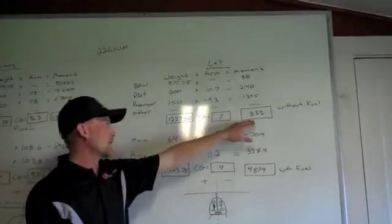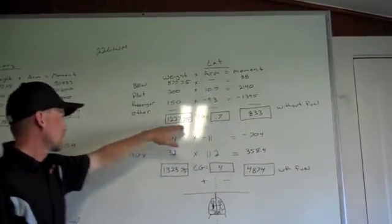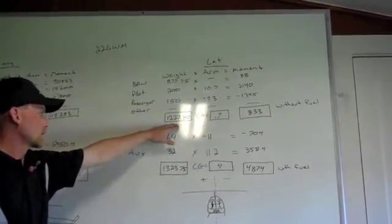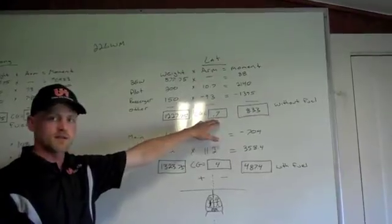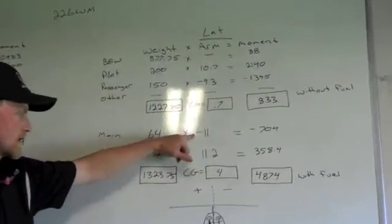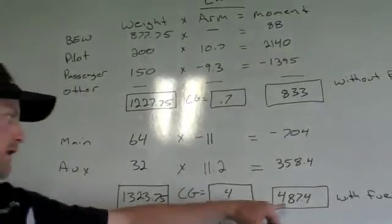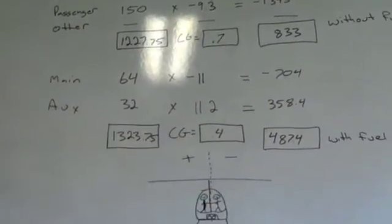So we come out with a moment of 833 pounds divided by our gross weight and we get 0.7. Again same thing with the fuel. One is going to be negative and one is going to be positive, and we do the math again to get the numbers.